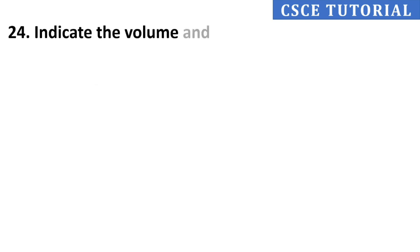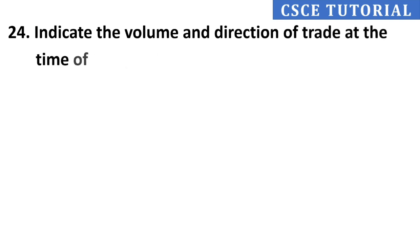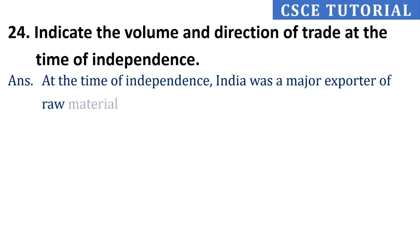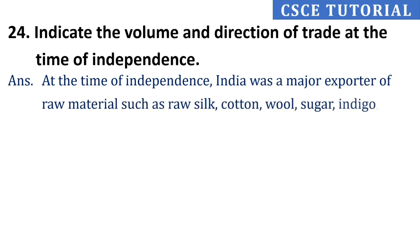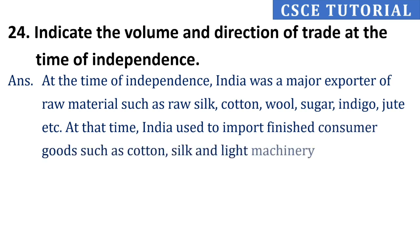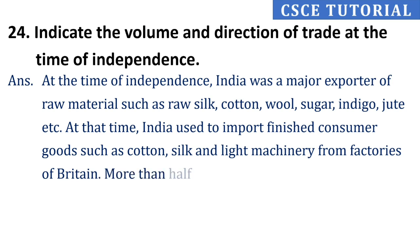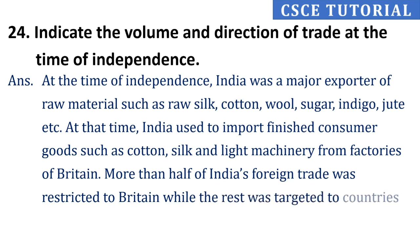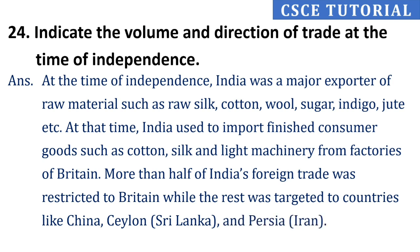Question 24: Indicate the volume and direction of trade at the time of independence. Its answer is, at the time of independence, India was a major exporter of raw materials such as raw silk, cotton, wool, sugar, indigo, jute, etc. India used to import finished consumer goods such as cotton, silk, and light machinery from Britain. More than half of India's foreign trade was restricted to Britain, while the rest was targeted to countries like China, Ceylon (Sri Lanka), and Persia, i.e., Iran.